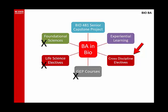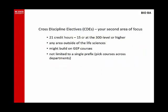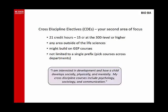This is the part of your degree that you design yourself. You pick an area of interest and create a list of courses relevant to that area. Your cross-discipline electives can be in any area outside of the life sciences. You will complete 21 credit hours of these cross-discipline electives, or CDEs as we call them, with at least 15 of those at the 300 level or higher. Don't limit yourself to a single course prefix — look for relevant courses of interest across departments. You identify an area of interest, explore relevant courses, and run your proposed CDE course list by your advisor for their approval.